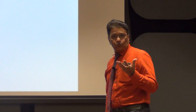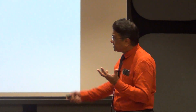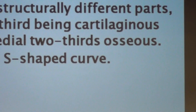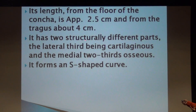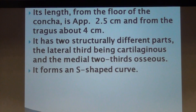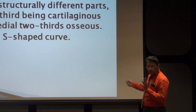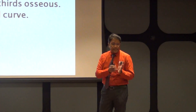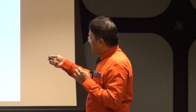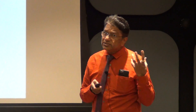The cartilage of the ear is continuous into the canal and forms the cartilaginous part - the lateral 8 mm of the canal formed by cartilage. The lateral one-third is the cartilaginous part and the medial two-thirds is the osseous part, that is 16 mm. These two parts are connected to each other by fibrous structure at the periphery - the cartilaginous part is attached to the osseous part by fibrous bands.